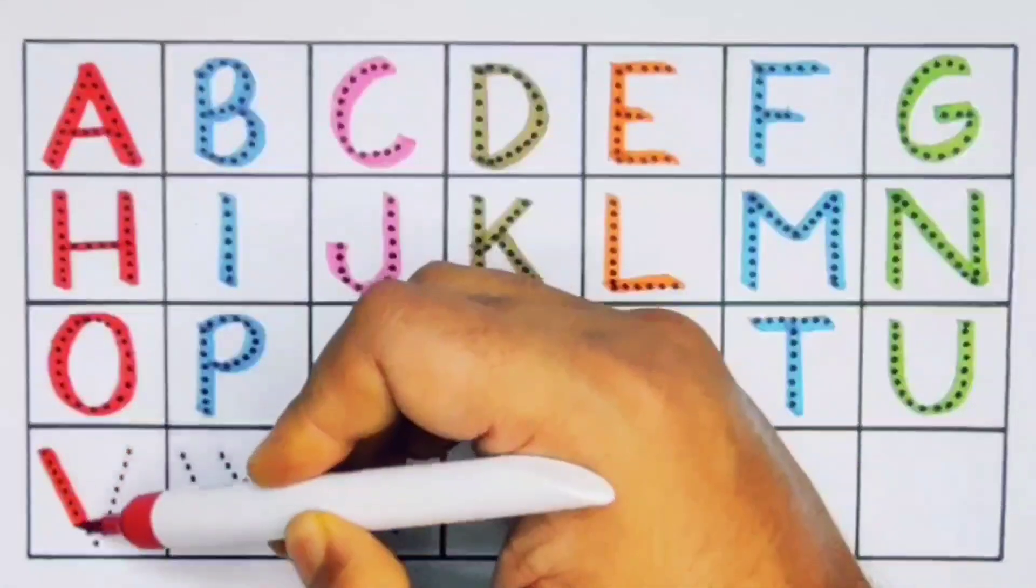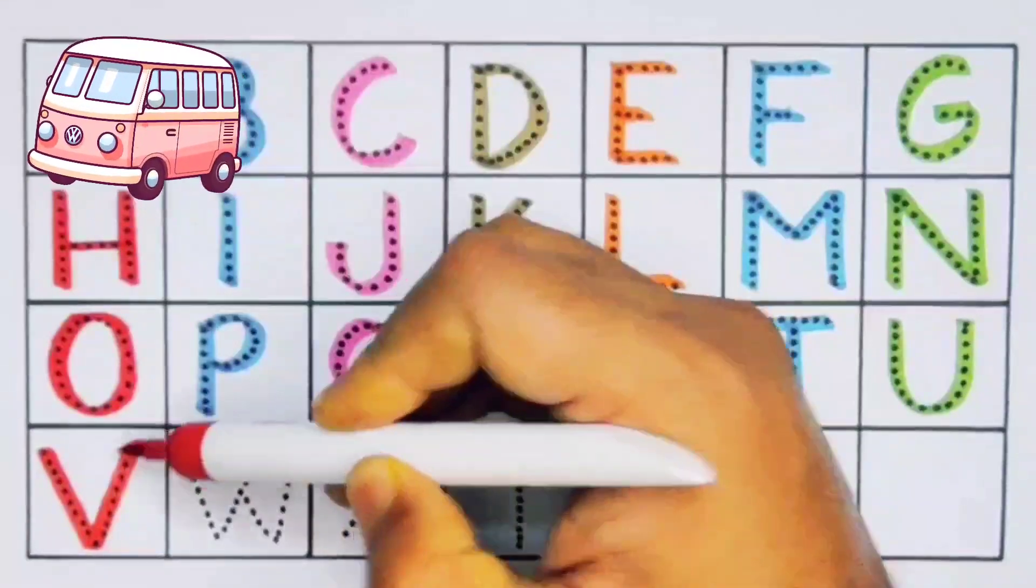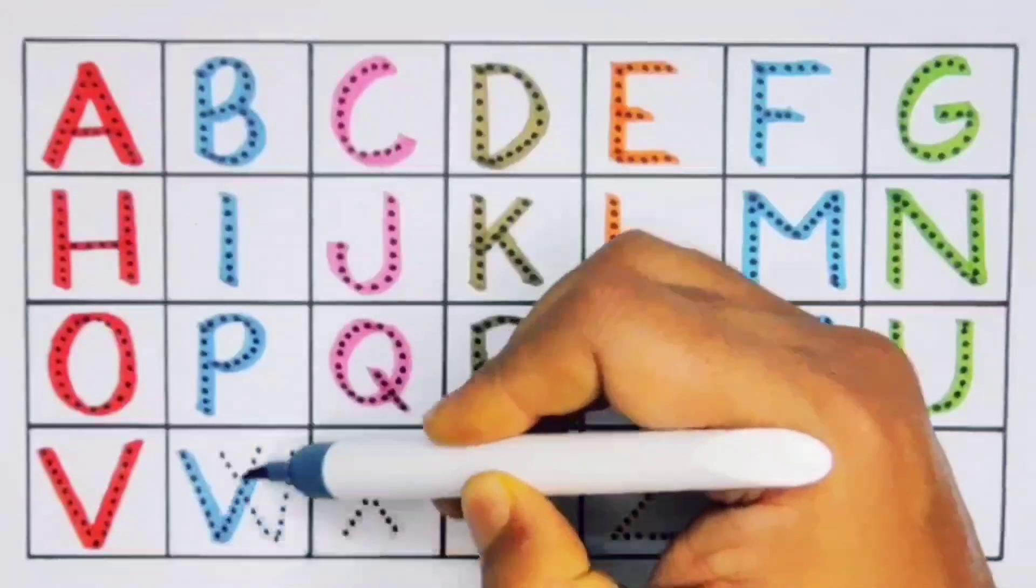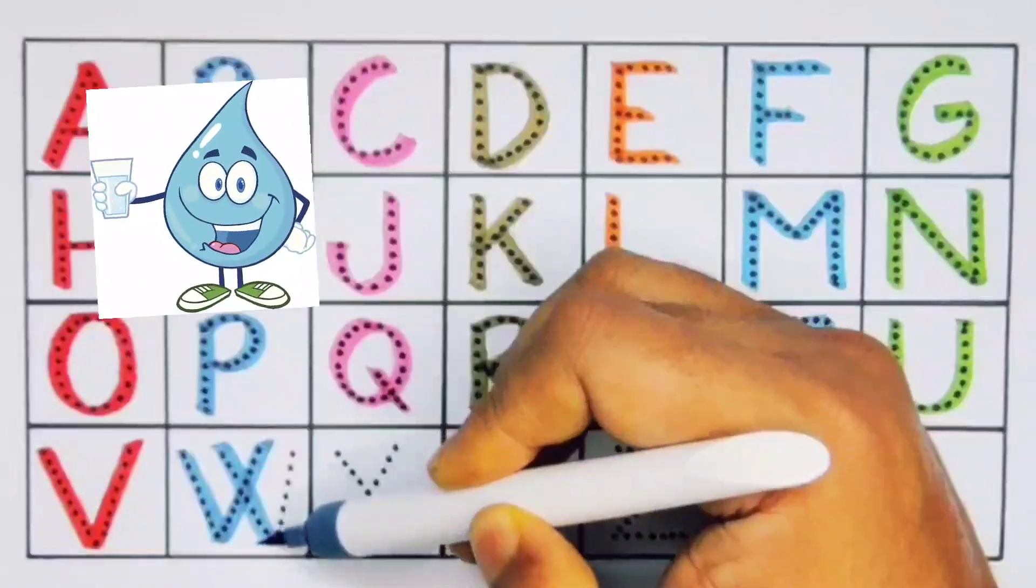Next V, V for van, V for van. Next W, W for water, W for water.